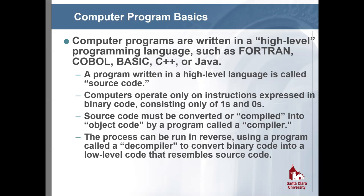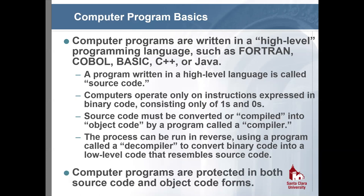In the first generation of software cases in the 1980s, it was established that computer programs can be protected by copyright in both their source code form and their object code form. Even object code expressed as a series of ones and zeros qualifies as a series of numerical symbols, meeting the definition of a literary work under copyright.